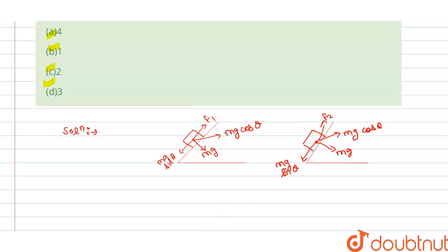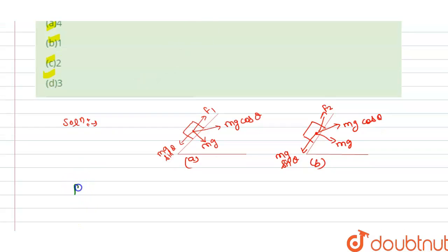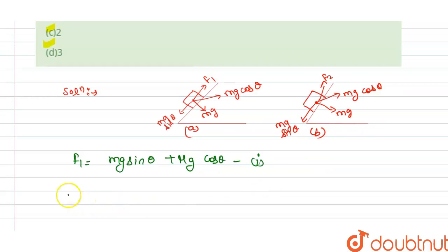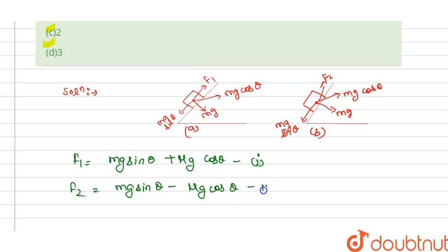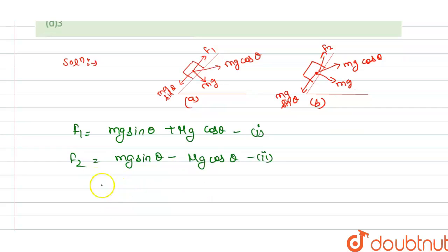For diagram A, the minimum force required to start pushing a body up the rough inclined plane is: f1 = mg sin θ + μmg cos θ. This is equation 1. For diagram B, the minimum force needed to prevent the body from sliding down is: f2 = mg sin θ − μmg cos θ. This is equation 2.